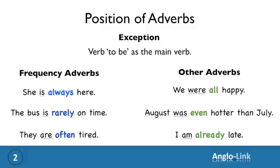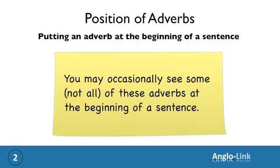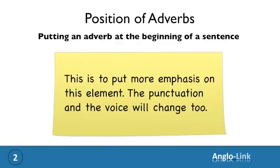Right then, to summarize: always put the adverbs before the main verb, except when your main verb is the verb 'to be.' Now let's look at a situation where you might see the adverb at the beginning of a sentence. It doesn't happen with all adverbs, but some adverbs can come to the beginning of a sentence, and as always, this is to put more emphasis on the adverb. Therefore, the punctuation and the voice will have to change too.